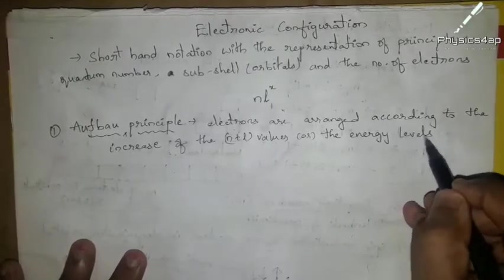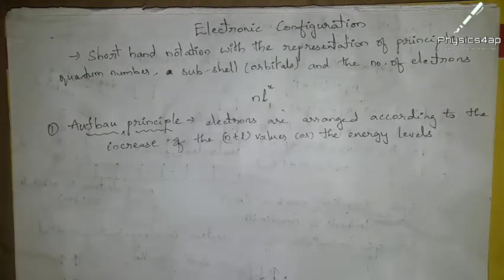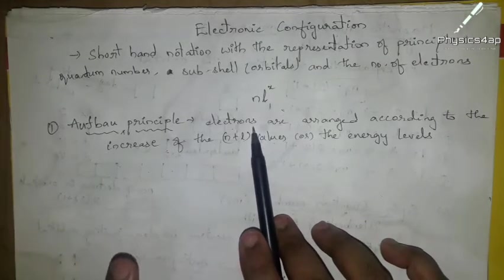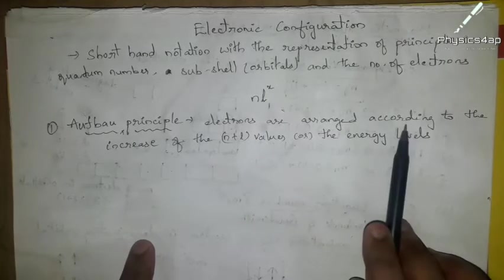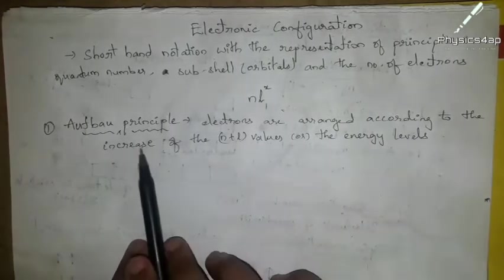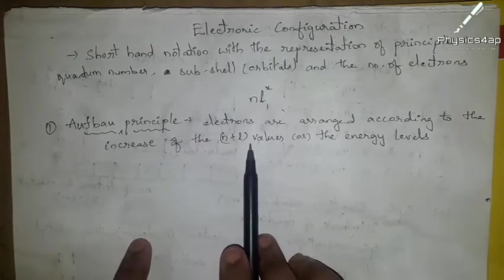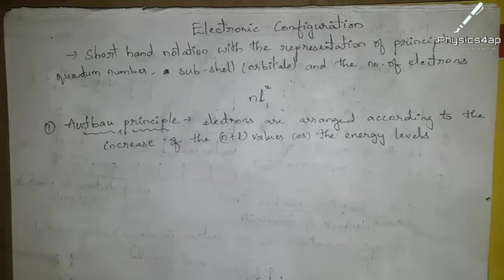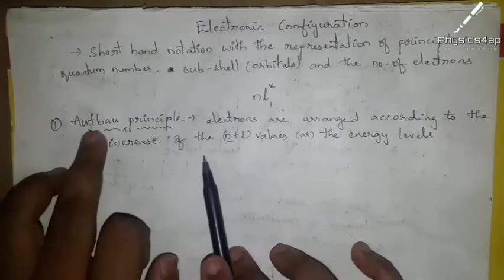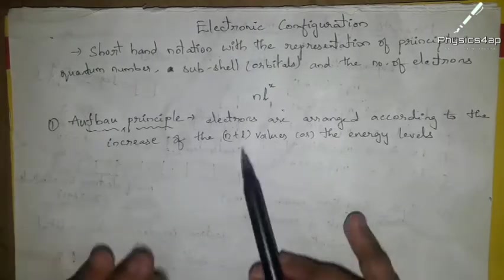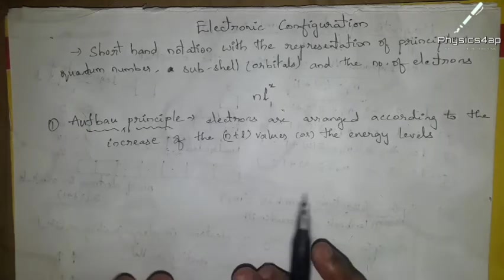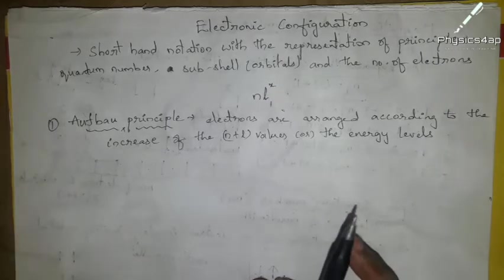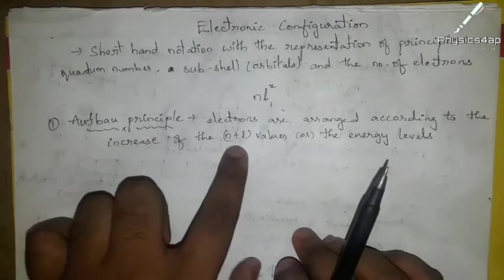So the arrangement of electrons is done in such a way that they should be arranged in increasing order of the n plus l values, or the energy levels. The word 'Aufbau' is derived from the German word meaning 'building blocks' — just as building blocks go from smaller to larger, the Aufbau principle arranges electrons from lower to higher energy levels.